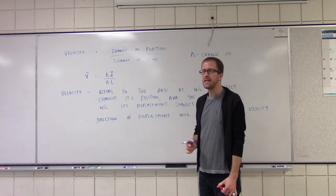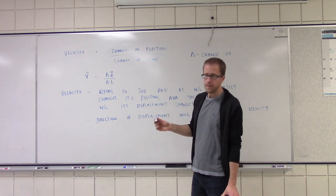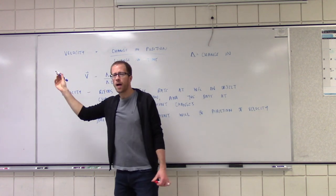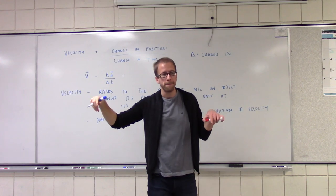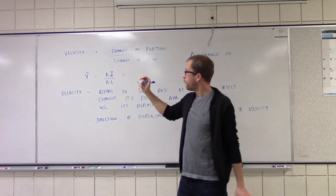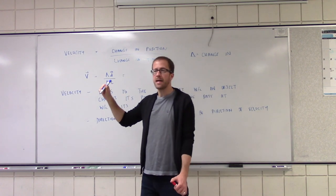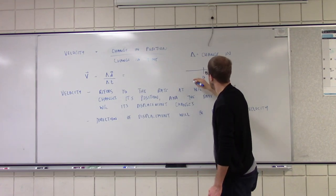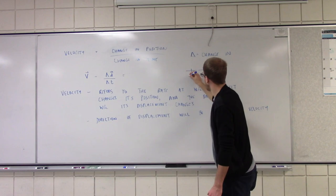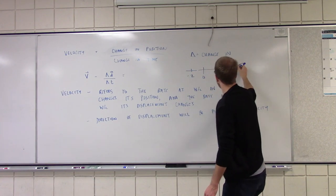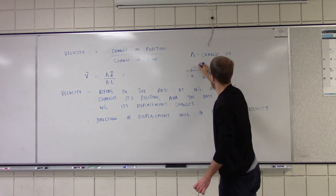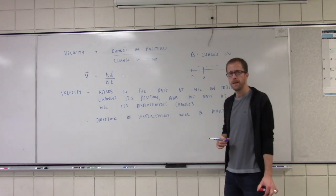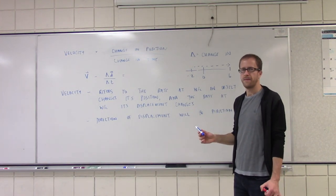Whenever we represent the change in something — how did I describe displacement? It only cares about start to finish. So if we want to find the change in our position, let's say we had a number line. Let's say you went from negative two to positive six. What was your total displacement? Eight — positive eight. And how did you figure that out? Mathematically, if you ever want to find the change in something, your change in position is going to be your final position minus your initial position.